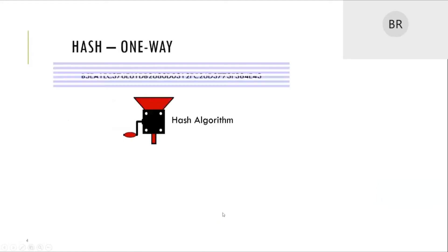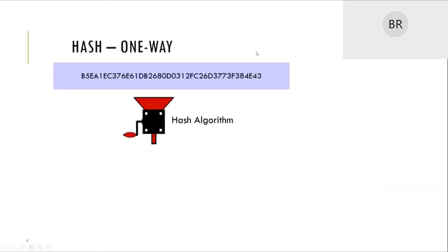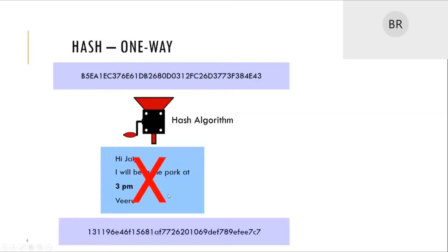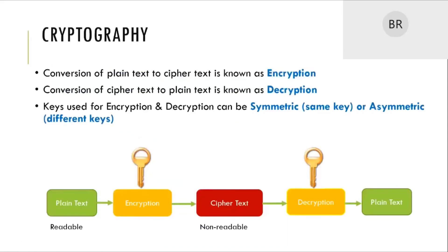This is a one-way algorithm. If you try to feed the hash value back into the hash algorithm, you would not get the original message back — that is why we put a red cross. Instead, you will get another hash value — another digest value. The output of a hash function is called a digest. This is the one-way function — if you pass the hash value in, you will get a totally different hash value. Now let us jump into cryptography before understanding how it works.